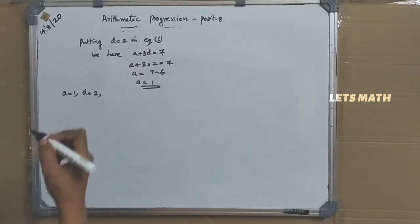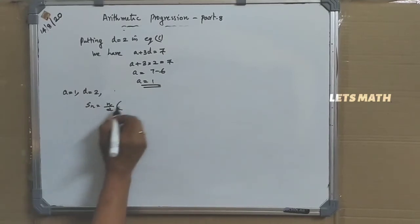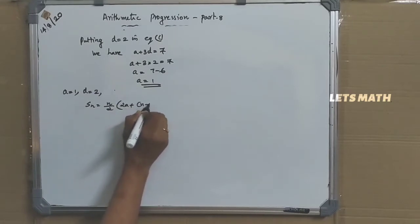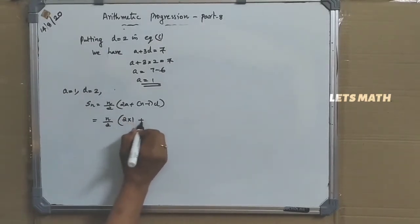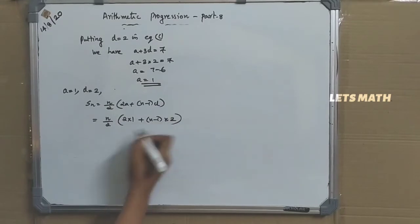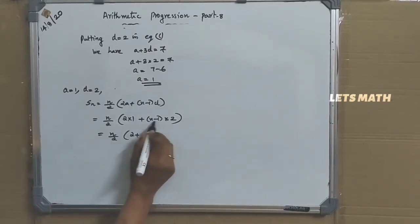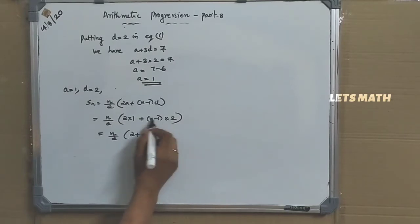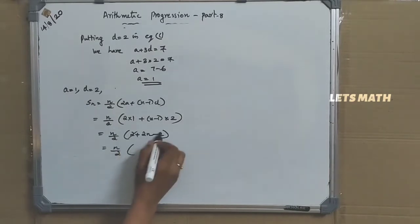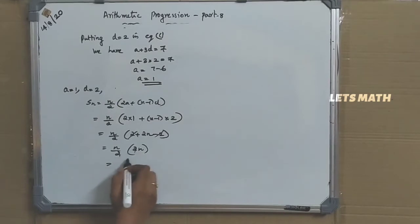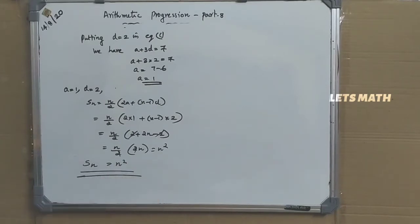It is asked to find the sum of N terms, SN. SN equals N by 2 into 2A plus N minus 1 into D, which is N by 2 into 2 plus N minus 1 into 2. Simplifying, N by 2 into 2N gives N squared. So the sum of N terms of this AP equals N squared.